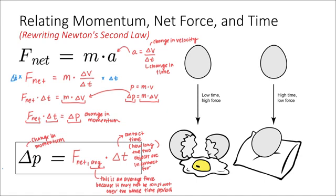And so now that we've related the change in momentum of an object to the net force exerted on it, and the time that the object is in contact with whatever is exerting that force on it, we can understand why the egg on the hard tile broke and the egg on the cushion did not.